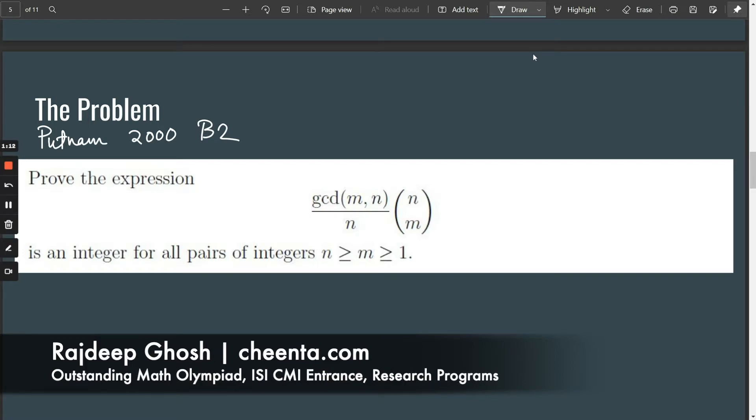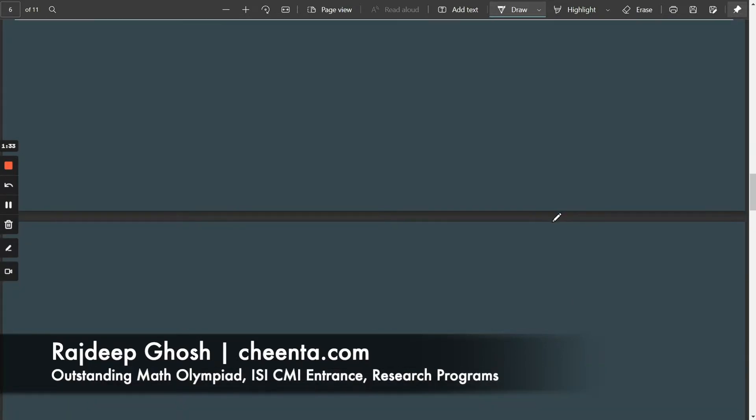The problem asks you to prove that the expression gcd(m,n)/n times n choose m is an integer for all pairs of integers n ≥ m ≥ 1. Now while this is the problem that we'll be trying to solve centrally, I would also like to discuss more about Bezout's Lemma as a thing of its own. And so I'll try to take the conversation away from this problem and we'll try to talk about something else.